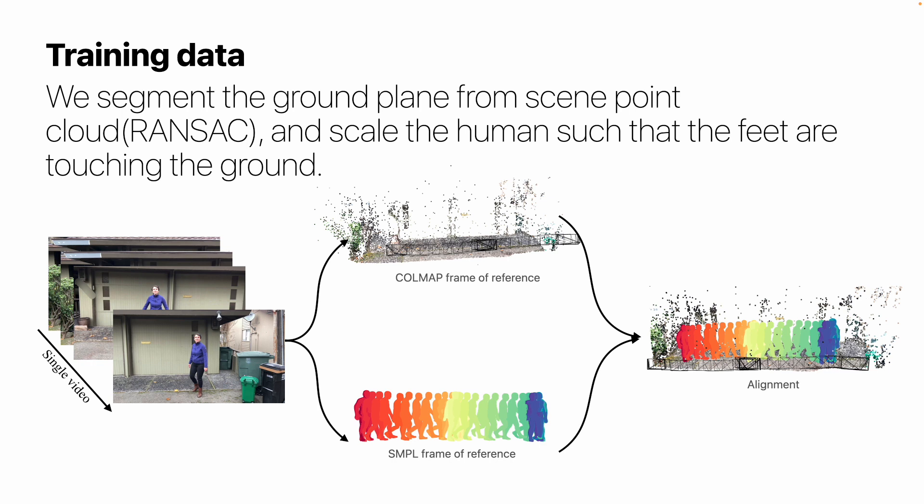To properly train the human NeRF model, we also need to know the scale of the human. We use COLMAP to obtain the camera poses and the sparse point cloud, and ROMP to estimate the SMPL parameters. The two methods use different coordinate systems. We solve the PnP problem to align the human and the point cloud. Then we segment the ground plane from the point cloud using RANSAC, and scale the human such that the feet are touching the ground.